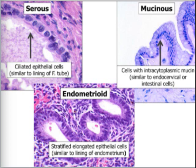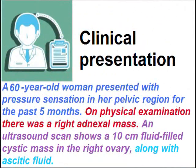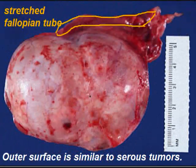Today we will discuss a mucinous malignant tumor of a 60-year-old woman who presented with pressure sensation in the pelvic region for the past 5 months. On physical examination, there was a right adnexal mass. Ultrasound scan reveals a 10 cm fluid-filled mass with ascites.